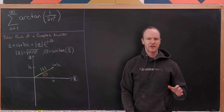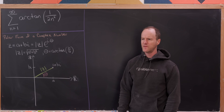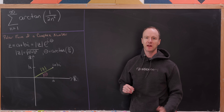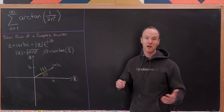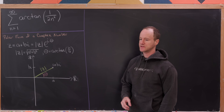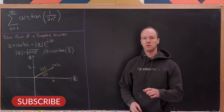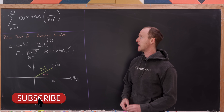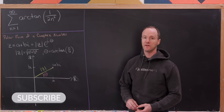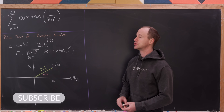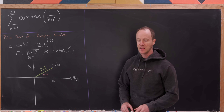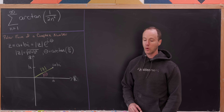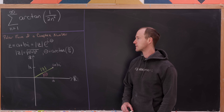Today I want to present an evaluation of a fairly well-known infinite sum, but the way we're going to evaluate it I think I've never seen before for this sum. In particular, we want to find the sum as n goes from 1 to infinity of the arctan of 1 over 2n squared, and here we're going to use complex numbers — in particular the polar form of a complex number.